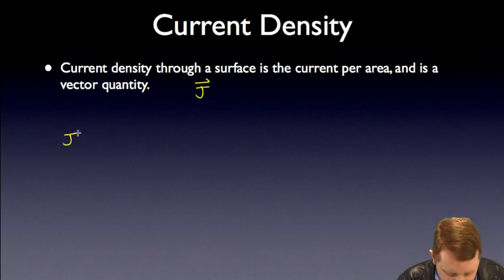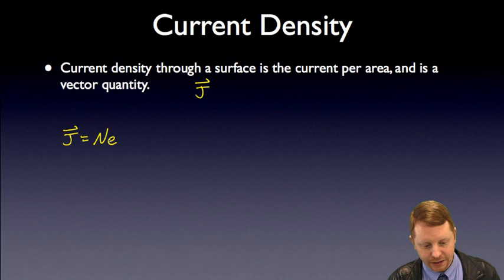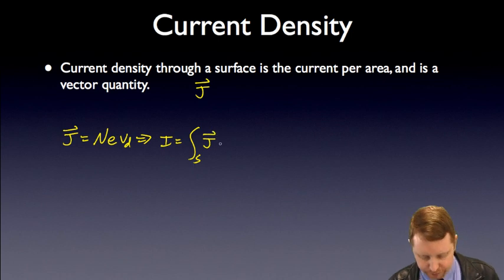So, thinking about it, the current density j is going to be the charge carrier volume density n times the charge on each of those carriers. So, that's the charge density times the drift velocity. Or we could say then that current is going to be the integral over our surface s of our current density dotted with our area.